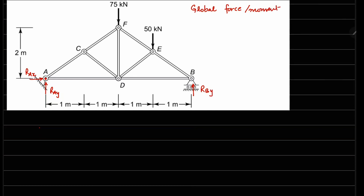For the force balance in the x direction, there is only one force which is RAx, and that has to equal zero. In the y direction, RAy going up, RBy going up, minus 75 kN going down, and minus 50 kN going down equals zero. That's the second equation, and the third one is going to be a moment equation.